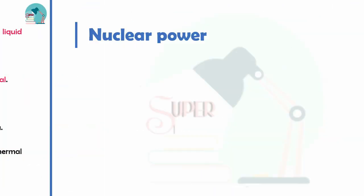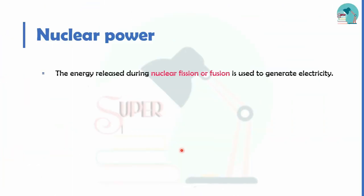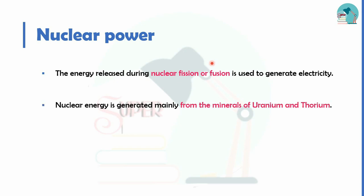Next, we have nuclear power. Nuclear power is produced by nuclear fission and fusion. You can refer to nuclear fission and fusion in the physics video. The nuclear fission and fusion process is used to generate nuclear power.